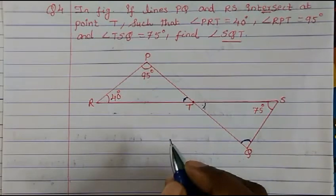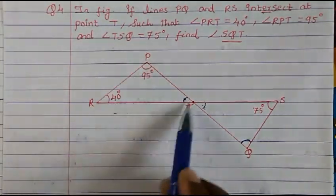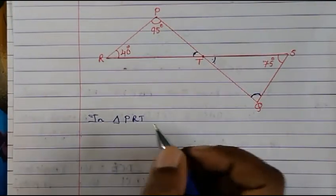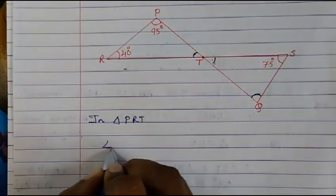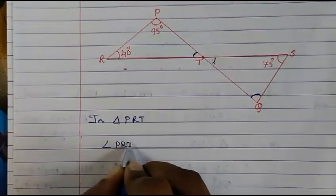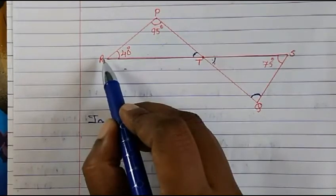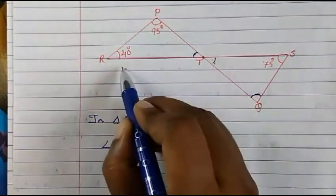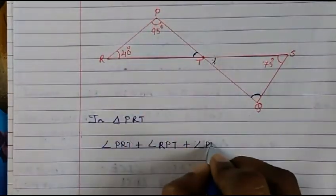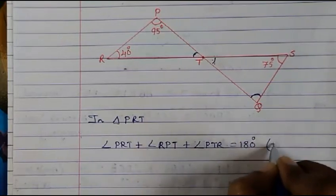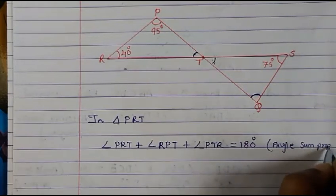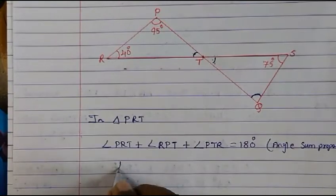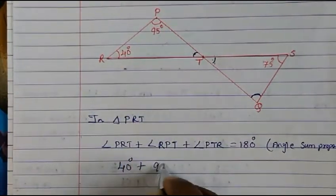First we'll find out this angle. In triangle PRT, we write down all three angles: angle PRT plus angle RPT plus angle PTR equals 180 degrees, because the angle sum property says the sum of angles of a triangle is 180. We know angle PRT is 40 degrees and angle RPT is 95 degrees.